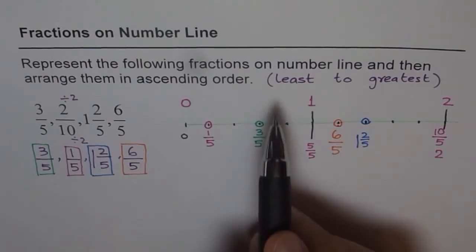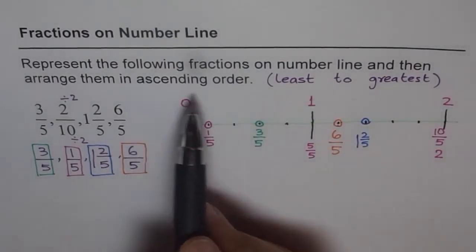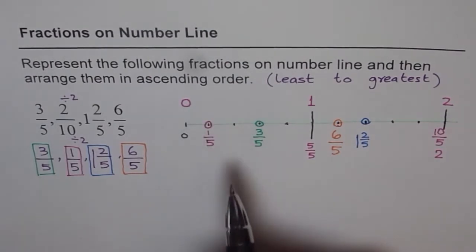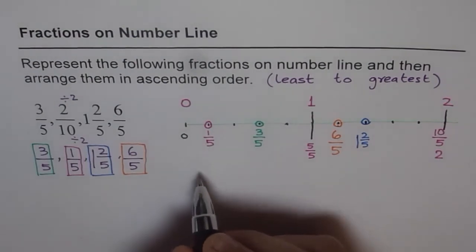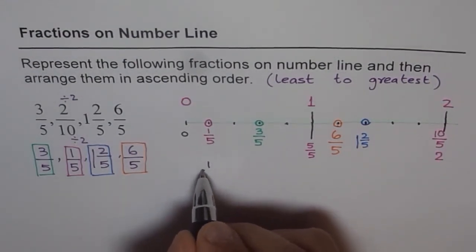So that is how we can place all fractions on a number line. And now it is easy for us to arrange them from least to greatest or ascending order. So we have to write the lowest one first. So the lowest one is 1 out of 5. The one on the left most.